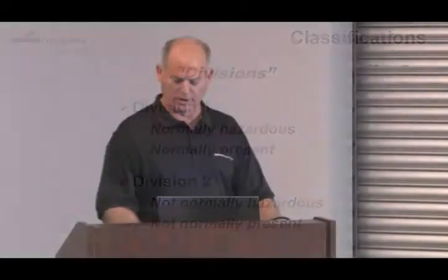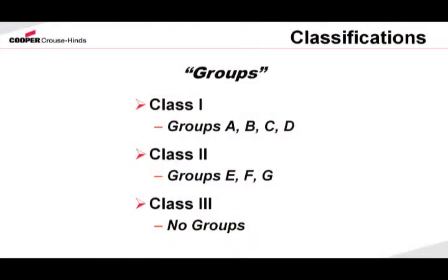To further break it down into a little bit more of a science, we get into group designations. For Class 1 gases, vapors, and liquids, we have Groups A, B, C, and D. The only member of Group A would be acetylene. For Group B, we have hydrogen and hydrogen-based gases. For Group C, we would have ethylene. And for Group D, we would have the hydrocarbon type gases. For Class 2 locations, we have Groups E, F, and G. Group E would be metallic dust. Group F would be carbonaceous dust. Group G would be grain dust. There are no group designations for Class 3 flyings and fibers locations.